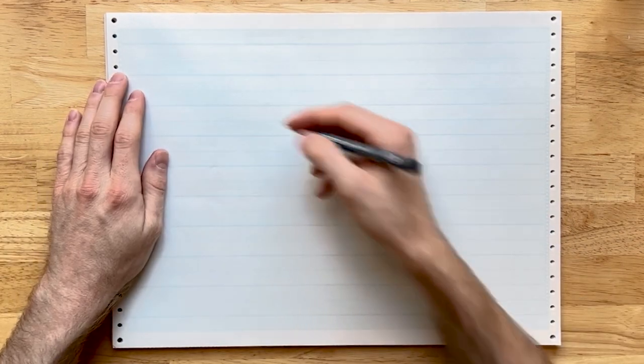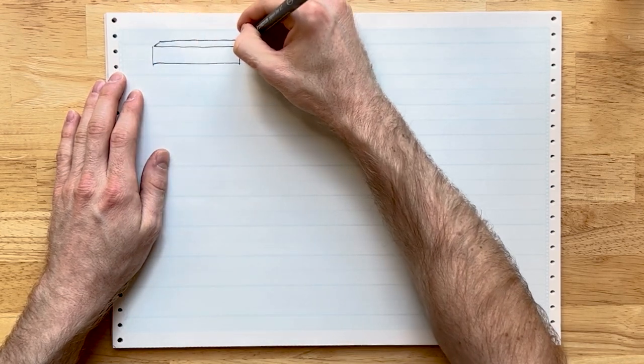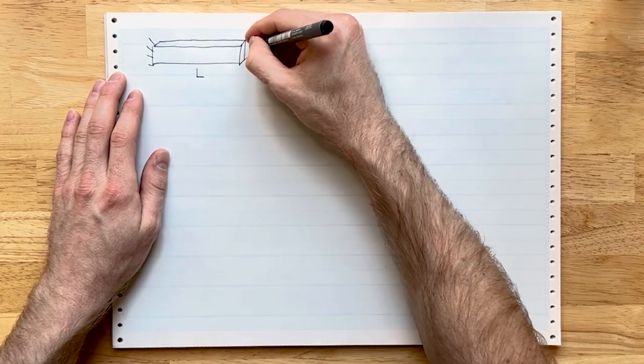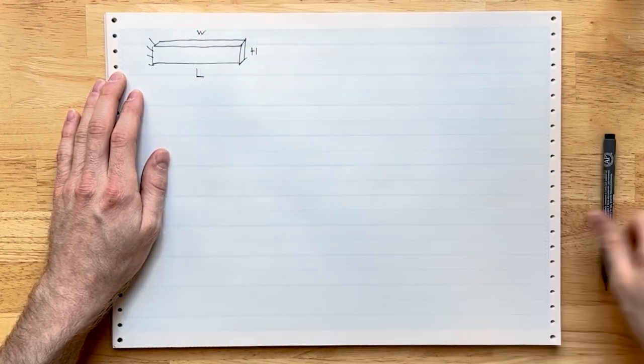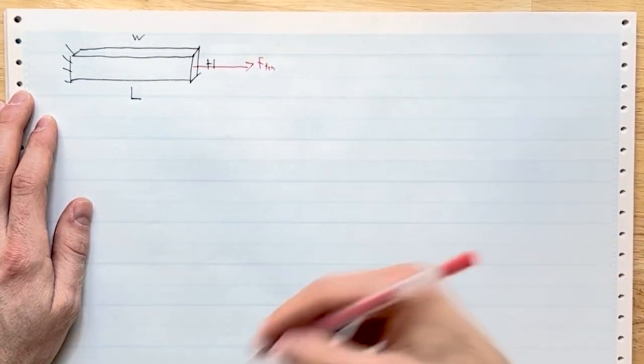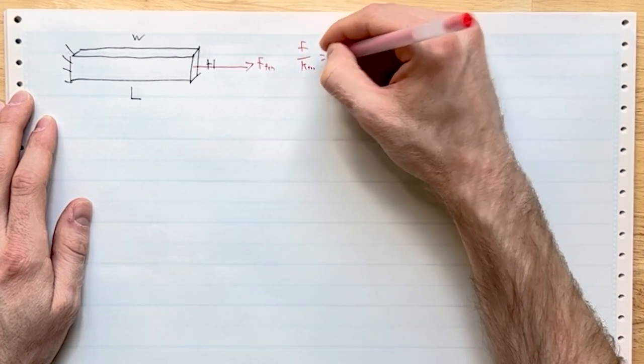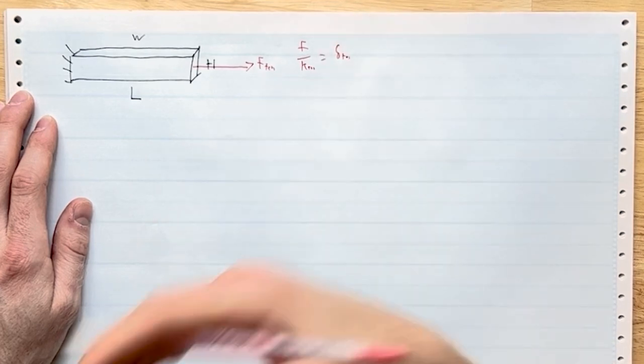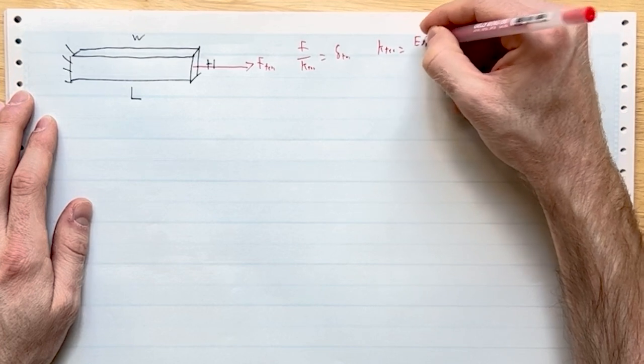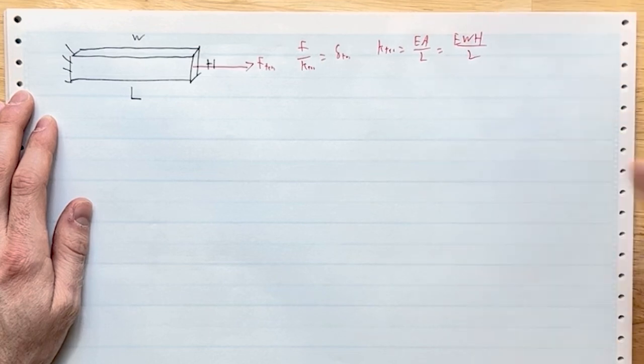We'll walk through how you actually calculate this. I'll start with my favorite beam. My favorite beam happens to be a rectangle today. It is built into a wall, that's a fixed constraint. It has a length L, a height h, and a width w. We'll start out by loading it with a force in tension F_t. We know that force divided by k_tension is going to equal delta in tension. The beam's going to get longer, and that stiffness k_tension is equal to EA over L, which in this case is EWH over L.